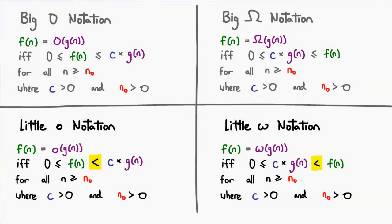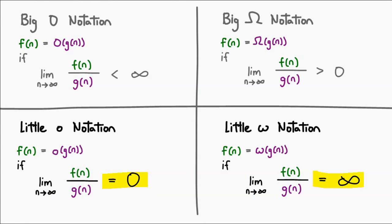There are actually two other notations which are quite a bit less used, but we're going to quickly cover them anyway. These are the little o and the little omega notations. Little o is exactly like Big O, except the inequality is strictly less than, as opposed to less than or equal to. The same deal applies for little omega. When proving these two relations using the limit method, you have to get the result exactly equal to zero or exactly equal to infinity, to ensure that G(N) is strictly less than or strictly greater than F(N) — for little omega and little o respectively.